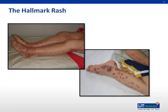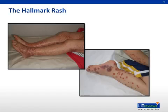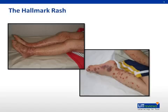The hallmark of HSP is its rash. Palpable purpura typically start as pink macules or wheals and develop into larger purpura. Occasionally, bullae and ulcerations develop, as illustrated by these pictures. The skin lesions are usually symmetric and have a predilection for the lower extremities or gravity-dependent areas. They also tend to appear in crops and may recur up to four months after their initial presentation.